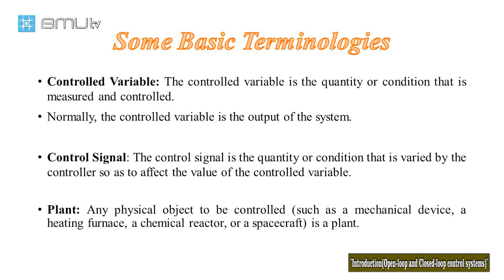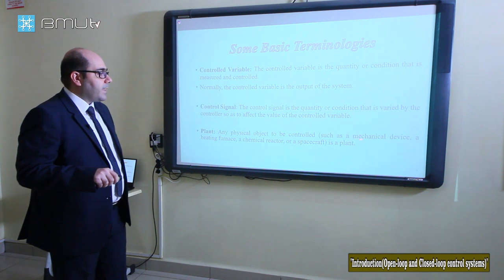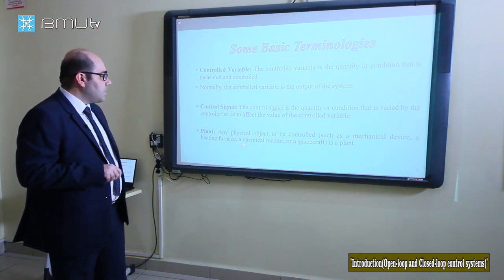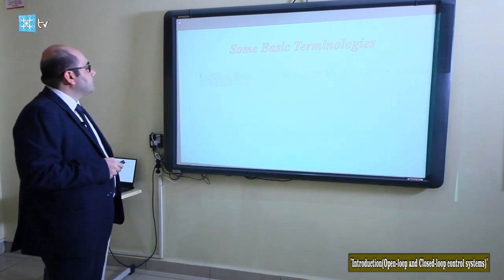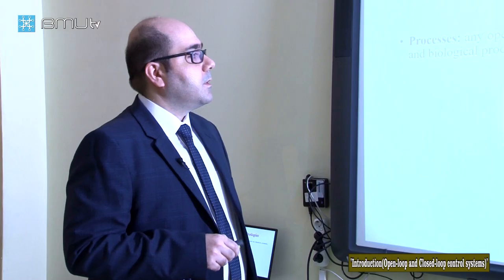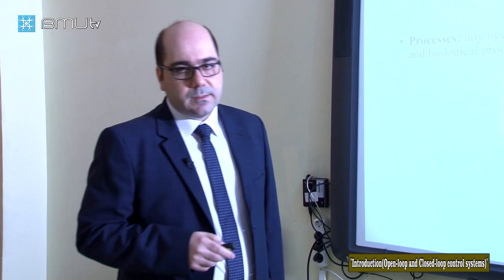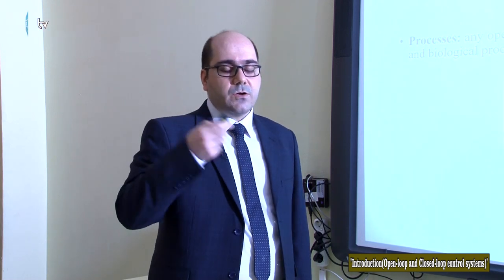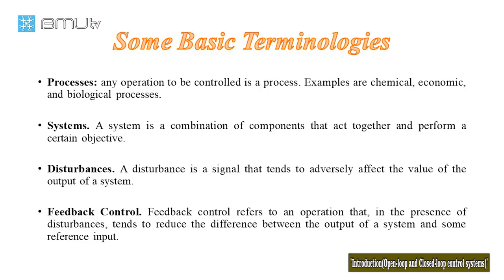A plant is any physical object to be controlled. This physical object can be a mechanical device, a heating furnace, or a chemical reactor, etc. A process is any operation to be controlled — examples are chemical, economic, and biological processes.